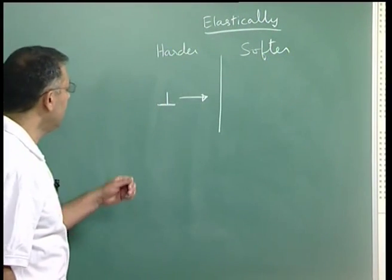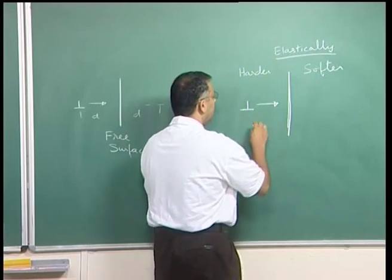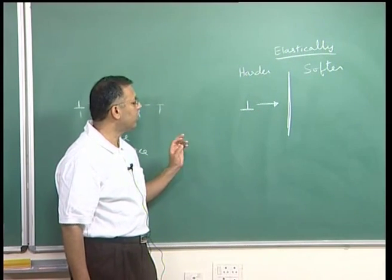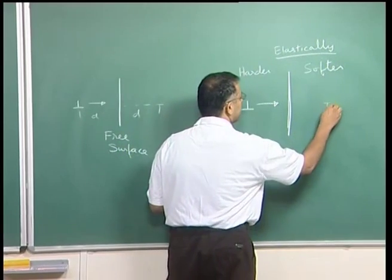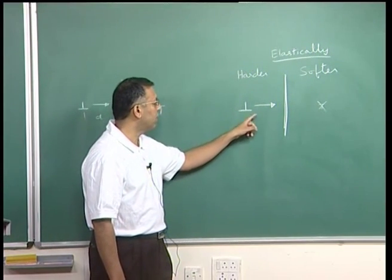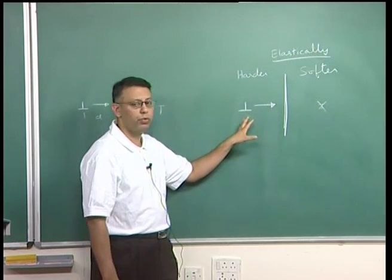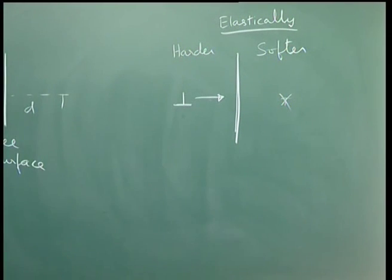This configurational force can loosely be called an image force even though we cannot make a strict image construction since this is not a free surface but a softer material. Nevertheless, the dislocation feels a configurational force towards the softer interface, because the energy of the system decreases as the dislocation is positioned closer to the softer material. Such effects also play an important role in the strengthening of these bilayers, contributing to hardening approaching the theoretical shear strength.